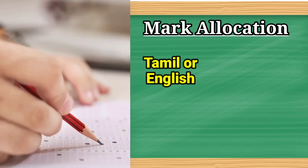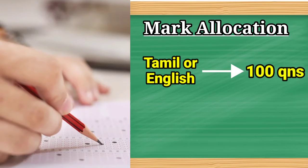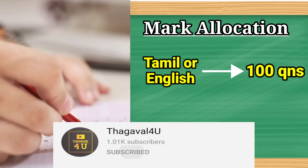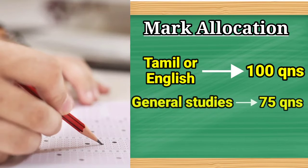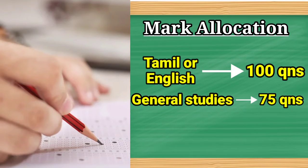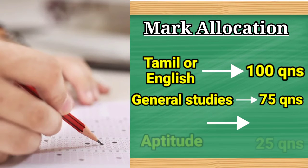For the mark split-up, the language section includes general questions, and you have to select English language. The remaining questions consist of 75 questions in General Studies and 25 questions in Aptitude.